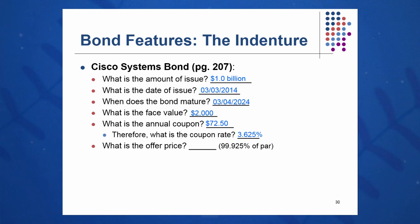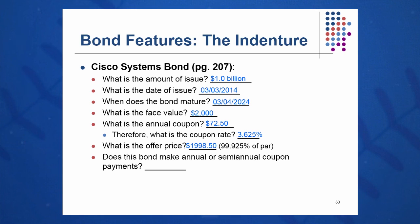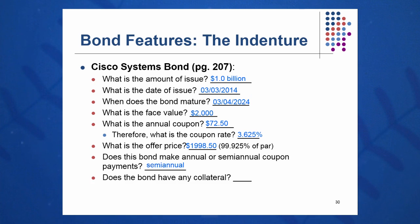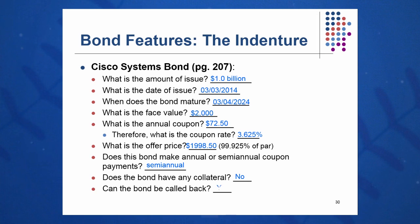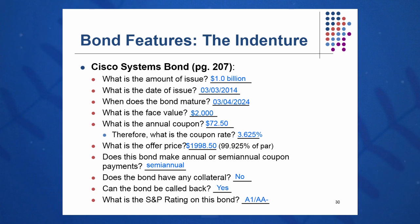What's the offer price — is it at a discount or at the full two thousand dollars? The indenture says it's 99.925% of par, so multiplying that by $2,000 gives an offering price of $1,998.50, a slight discount to the $2,000 face. Does the bond make annual or semi-annual coupon payments? It's semi-annual, so we must do C divided by 2, R divided by 2, and T times 2 to calculate the price. Does the bond have any collateral? No. Can the bond be called back early? Yes, it is callable. What's the Standard & Poor's rating? It's in the A category — rated A1/AA-minus — so relatively safe and highly rated.